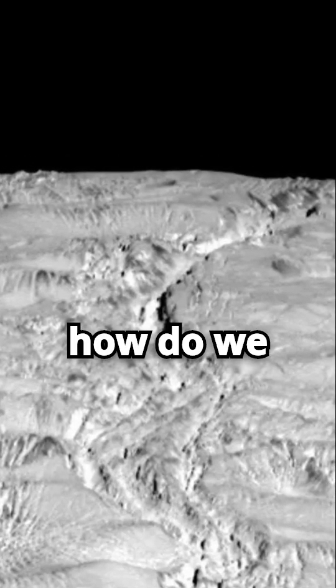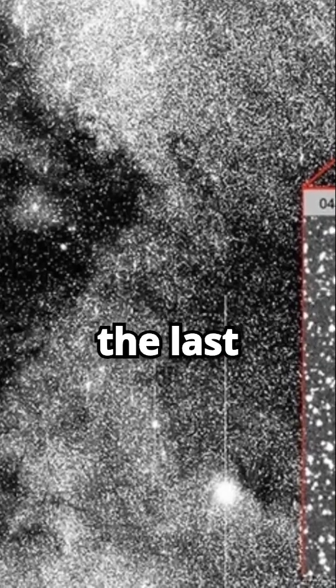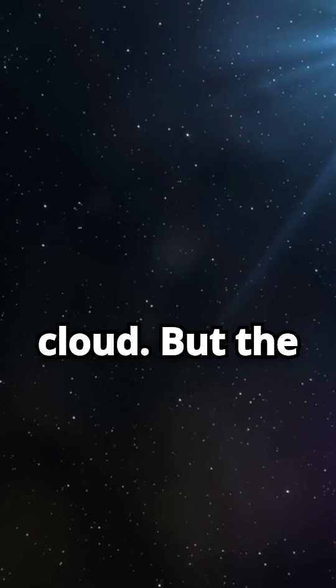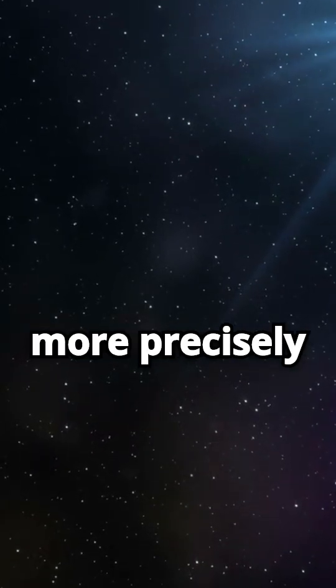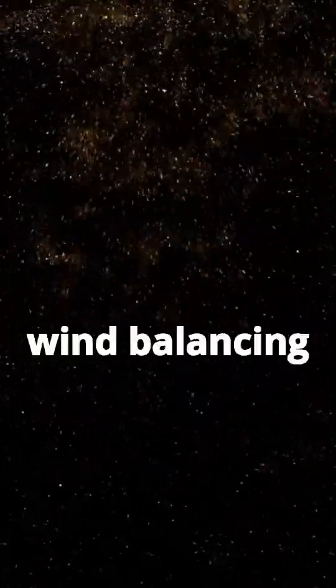Now, how do we define the solar system's edge? You might think of the last planets or even the Oort cloud. But the boundary is more precisely defined as the heliopause. This mark signifies where the sun's solar wind meets interstellar wind, balancing pressures.